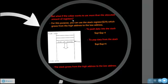So what if the program wants to use more than the allocated amount of registers? For this purpose, you can use the stack register, which is register number 29, which grows from the high address to the low address. I will be explaining this in a minute.